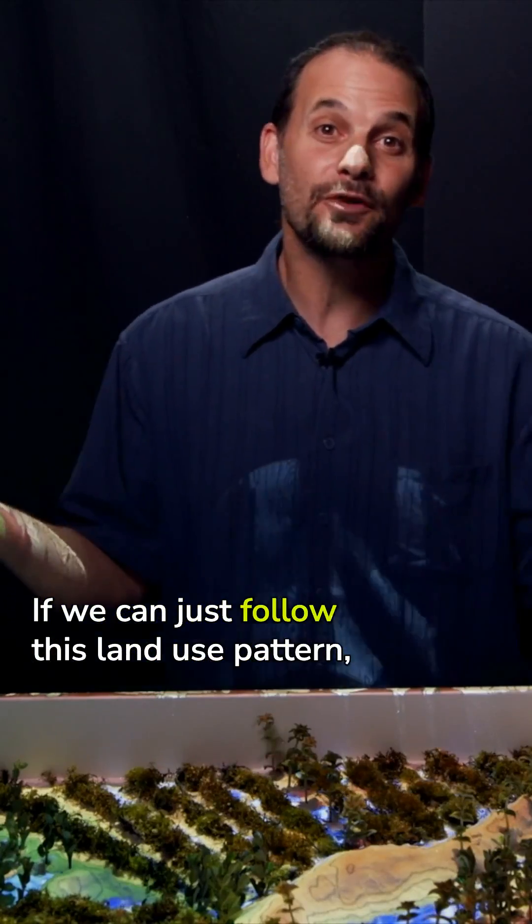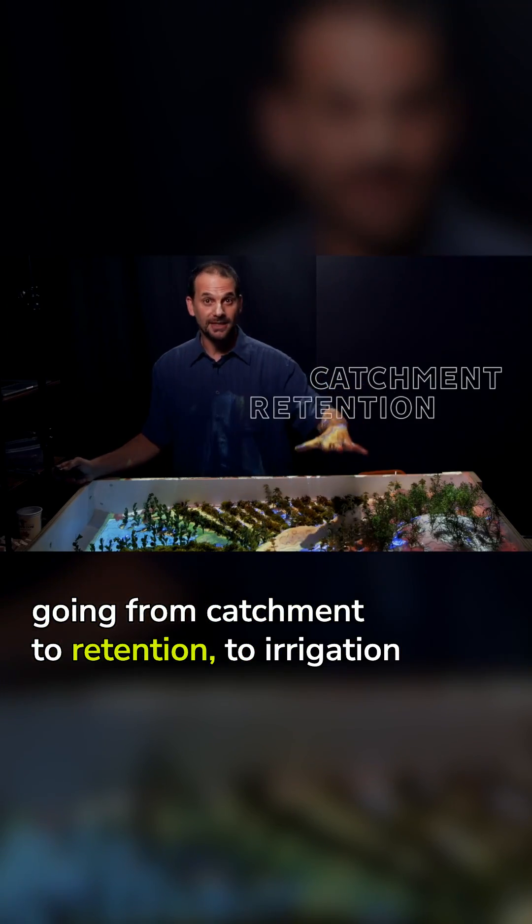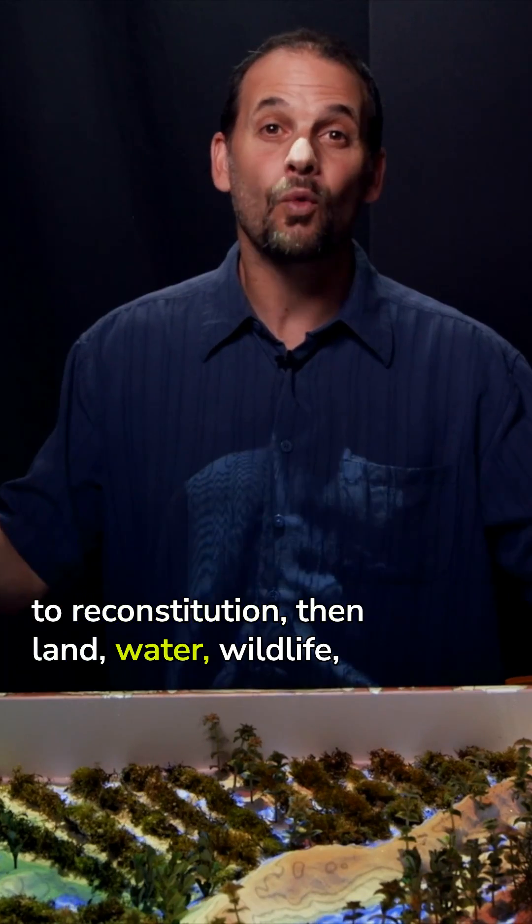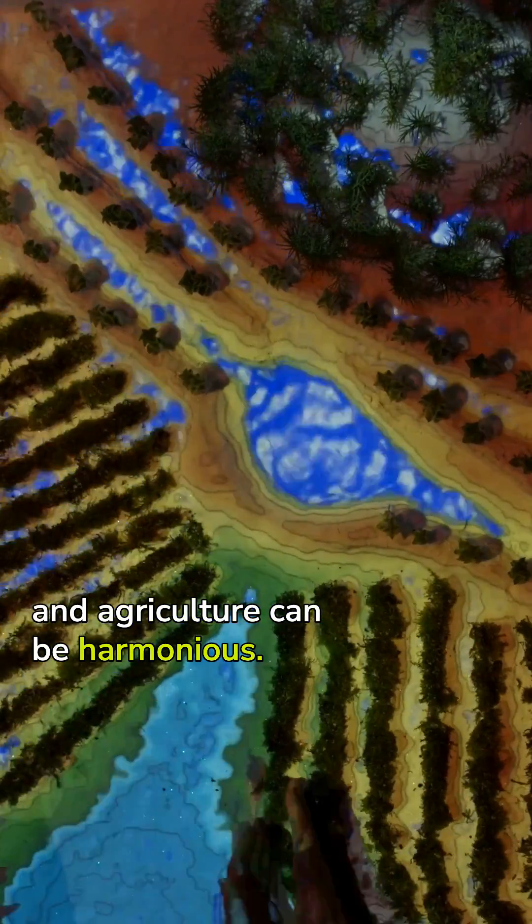If we can just follow this land use pattern going from catchment to retention to irrigation to reconstitution, then land, water, wildlife, and agriculture can be harmonious.